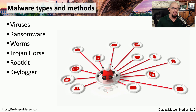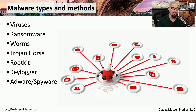Malware that installs itself as a keylogger will monitor and store all of the keys that you press, including those that include your username and password. Adware and spyware is malware that will present advertising to you or watch where you visit on the internet. And if your system does become part of a botnet, you've installed malware that allows a third party to take control of your system.